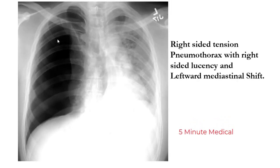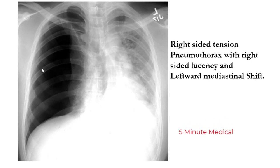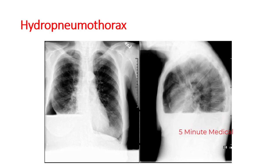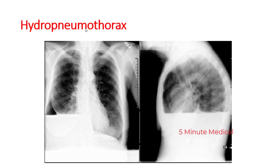Tension pneumothorax is best demonstrated on an expiration film. This lucency is due to entering air. Right-sided tension pneumothorax shows right-sided lucency with leftward mediastinal shift — very important. Hydropneumothorax, most commonly due to trauma, shows both air and fluid entering the pleural cavity.